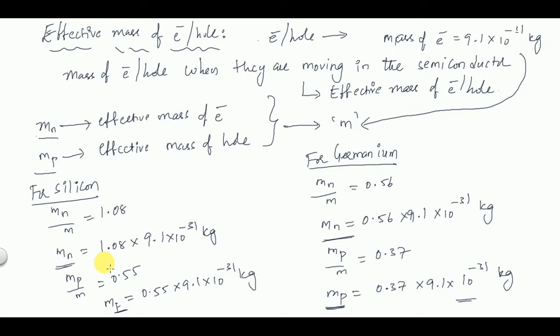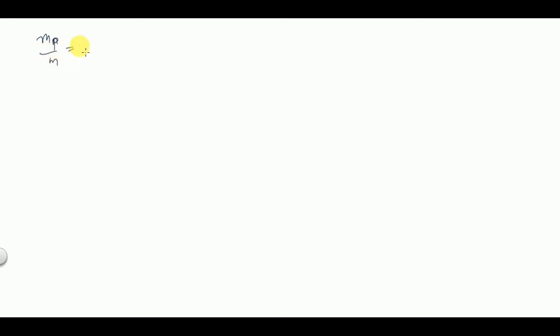This is how we find the effective mass of electron or hole in a semiconductor. I am sorry — mp/m for germanium is actually 0.29, not 0.37 as I mentioned earlier. Please make the necessary correction.